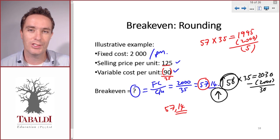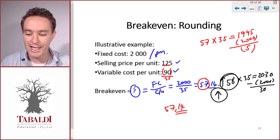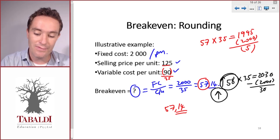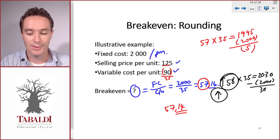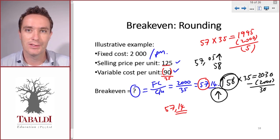But most questions that you'll see will deal with units of production or a product, a whole product. And in that case you always round up even if it is a very small decimal. So even 57.05 will still round up to 58 units.